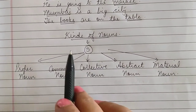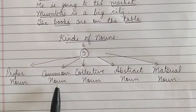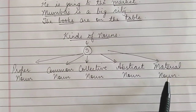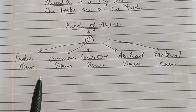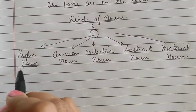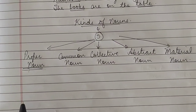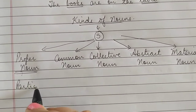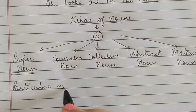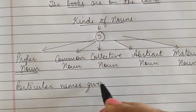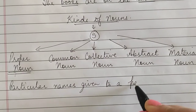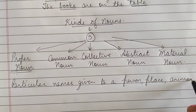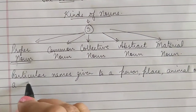I will repeat the kinds of noun once again: proper noun, common noun, collective noun, abstract noun and material noun. Now children I will explain all these different kinds of noun one by one. First of all let's start with proper noun. Children, proper nouns are the particular names given to a person, place, animal or a thing.